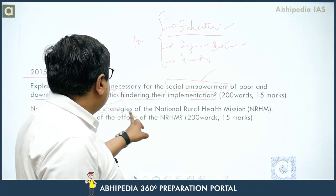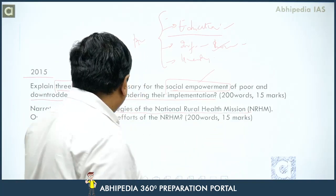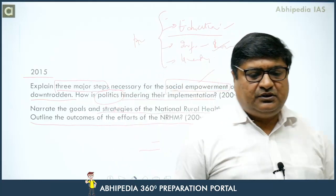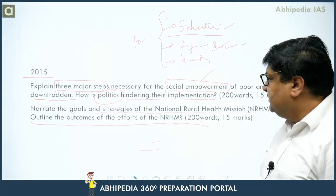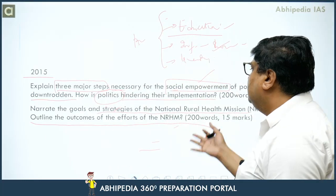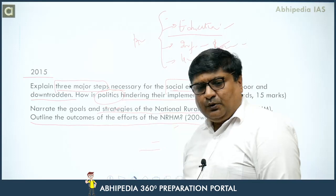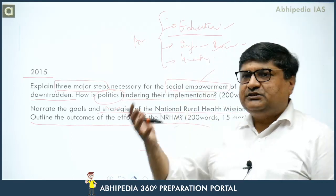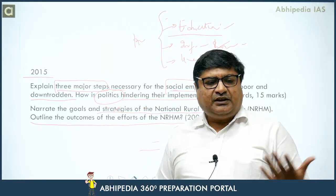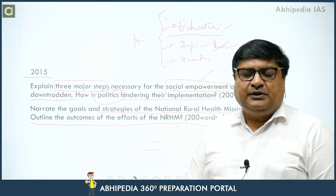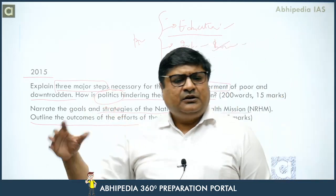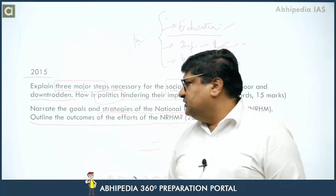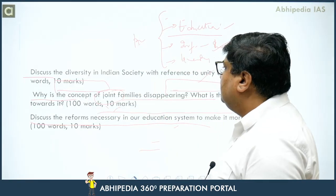Next 2015 question: narrate the goals and strategies of the National Rural Health Mission (NRHM) and outline its outcomes. It is a straightforward factual question — narrate what NRHM's goals and strategies are, and then give an assessment of its achievements.